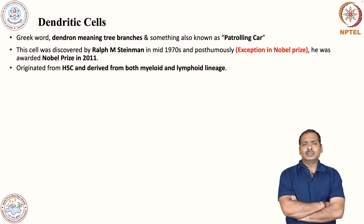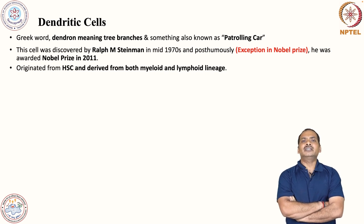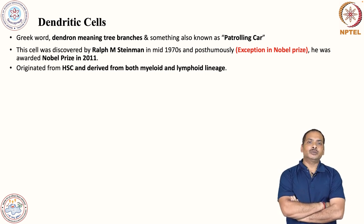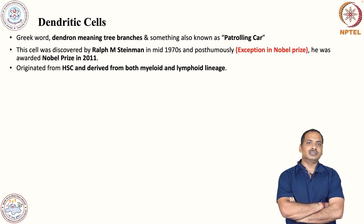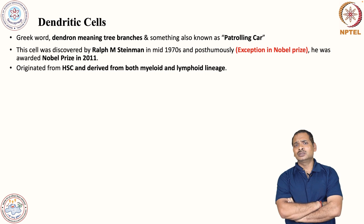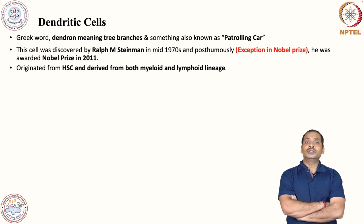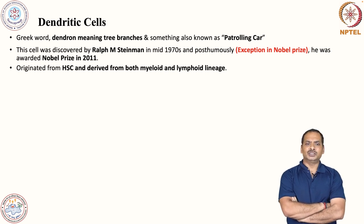Dendritic cells are derived from hematopoietic stem cells — one lineage is myeloid and another is lymphoid. So dendritic cells can be derived from both myeloid lineage as well as lymphoid lineage; these cells can come from either of these origins.